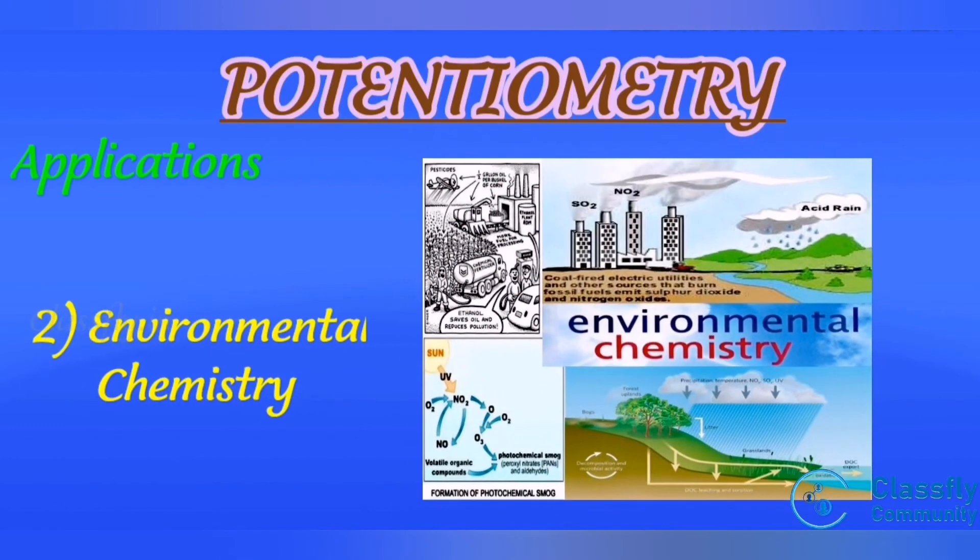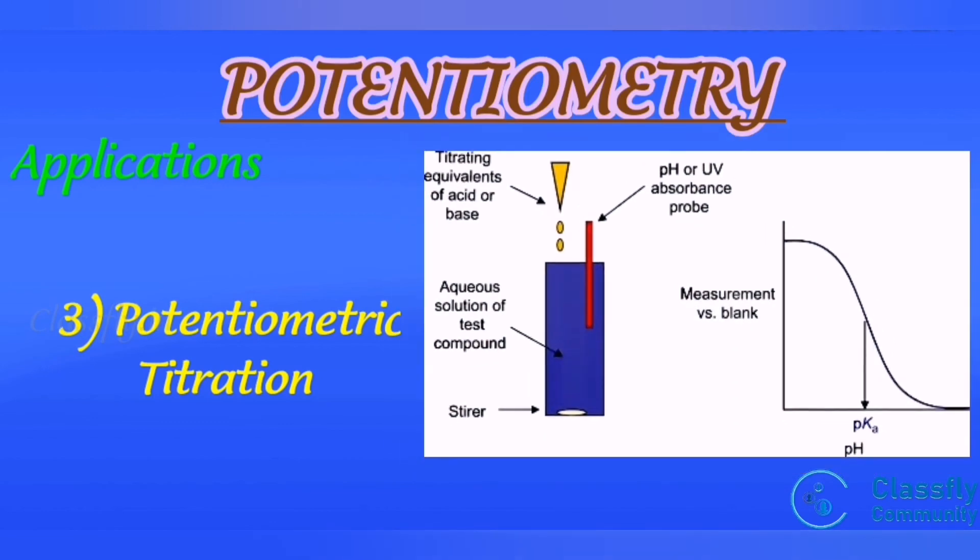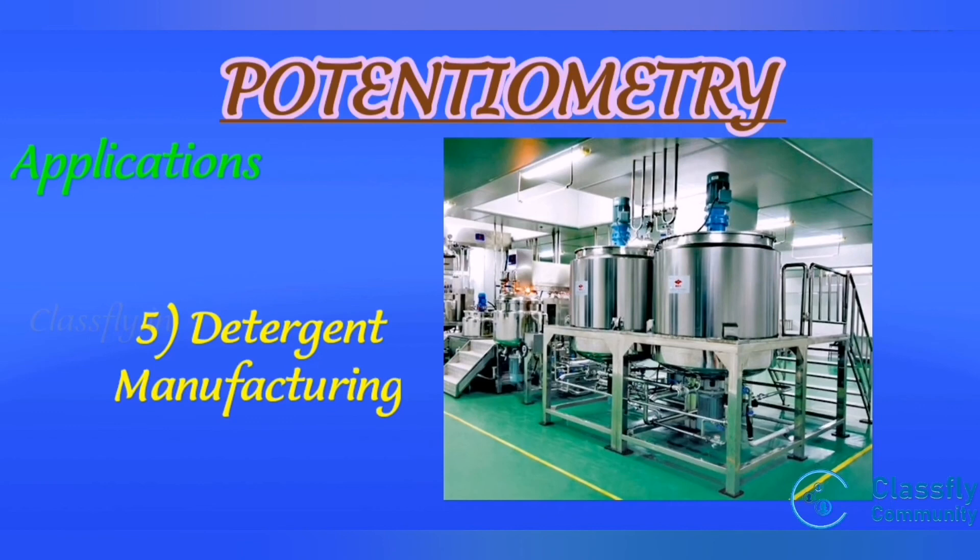Second one is environmental chemistry. Third one is potentiometric titration for determining the equivalence point of acid-base titration, possible for redox, precipitation, acid-base, complex, as well as for all titrations in aqueous and non-aqueous solvents. Fourth one is agriculture. Fifth one is detergent manufacturing. Calcium, barium, fluorine for studying effect in water quality.